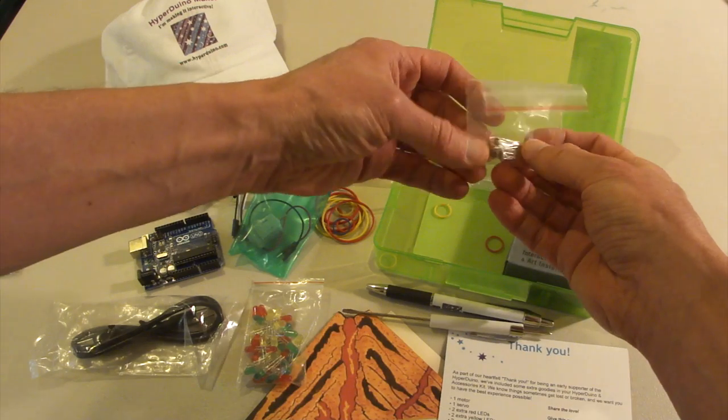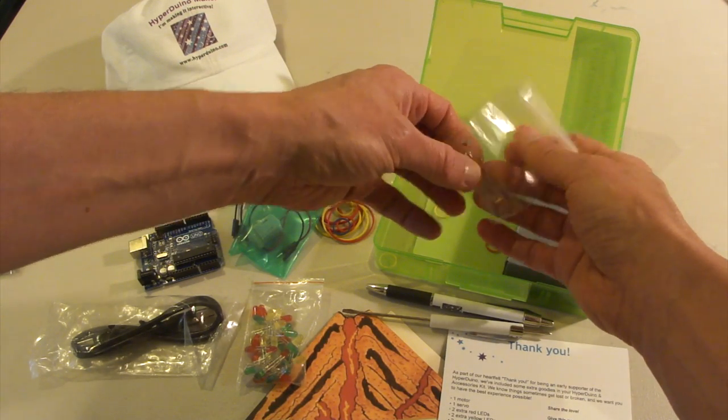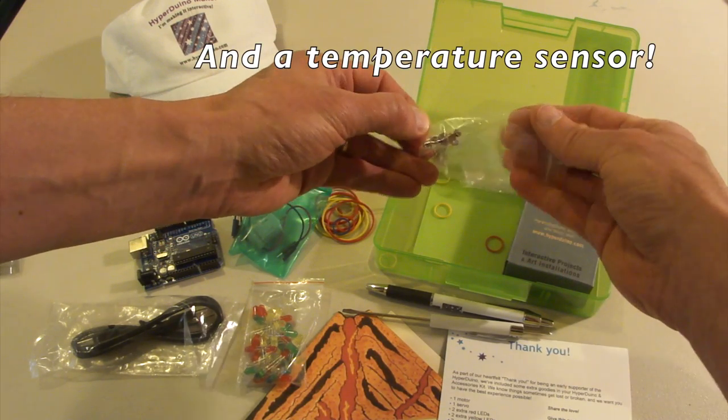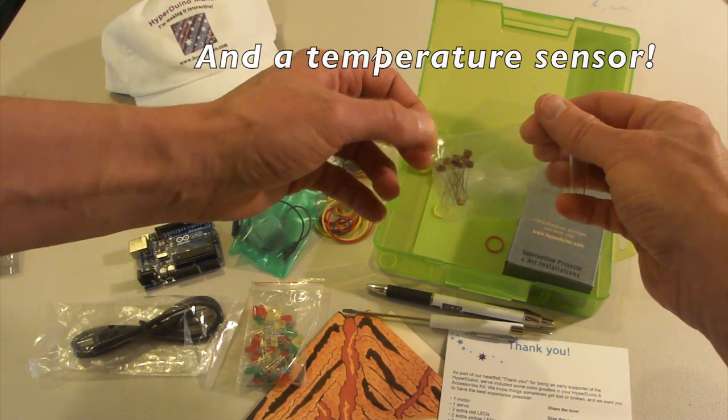There are some light sensors. So these are little photo cells you can use to trigger when a person puts their hand over it.